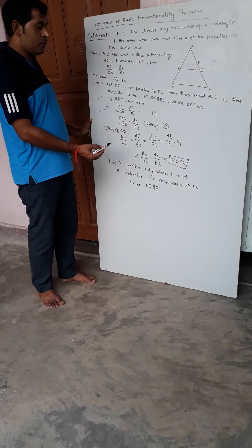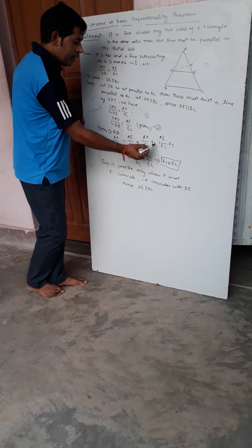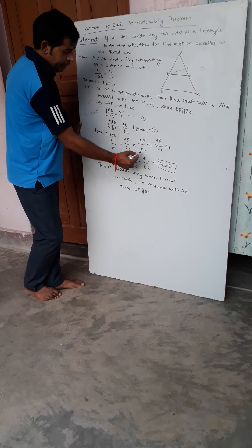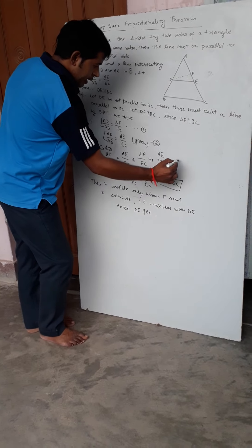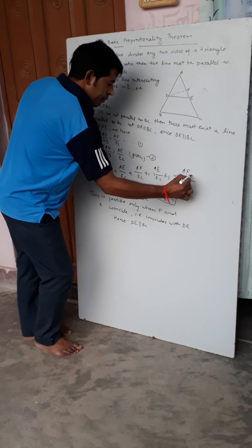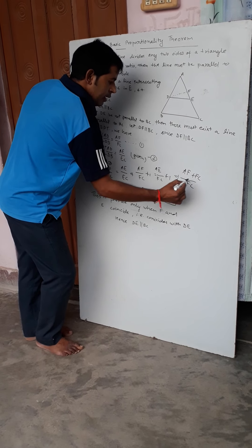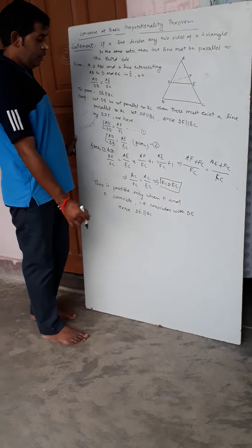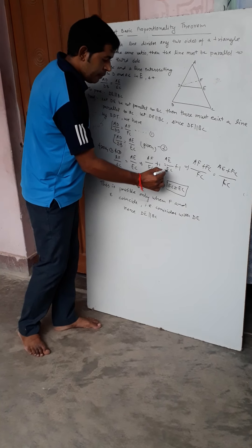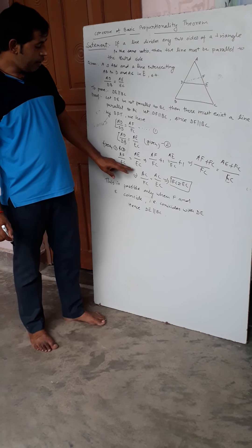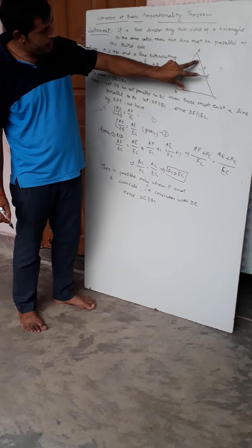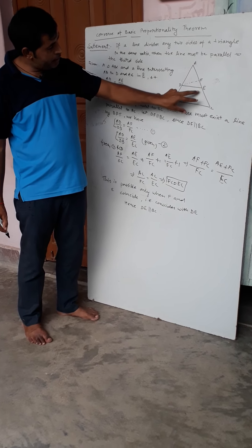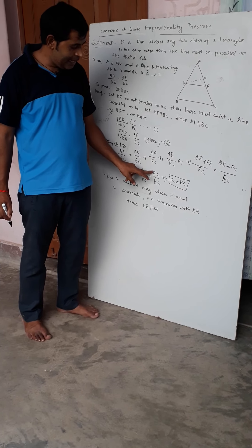Now, we can add the same quantity to both sides. Let us add 1 to both sides. So, AF upon FC plus 1 equals AE upon EC plus 1. Taking LCM, this gives AF plus FC upon FC equals AE plus EC upon EC. Since AF plus FC equals AC and AE plus EC equals AC, we get AC upon FC equals AC upon EC.